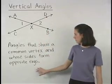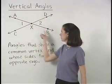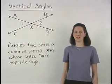So based on this definition, angles A, X, D and C, X, B would also be vertical angles.